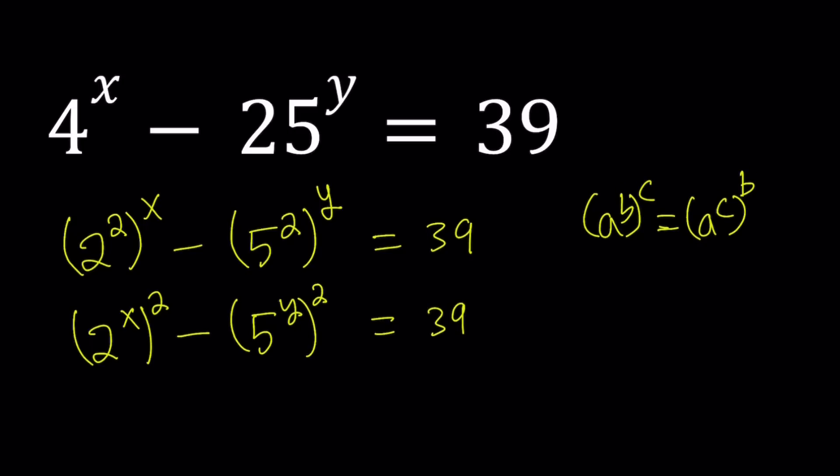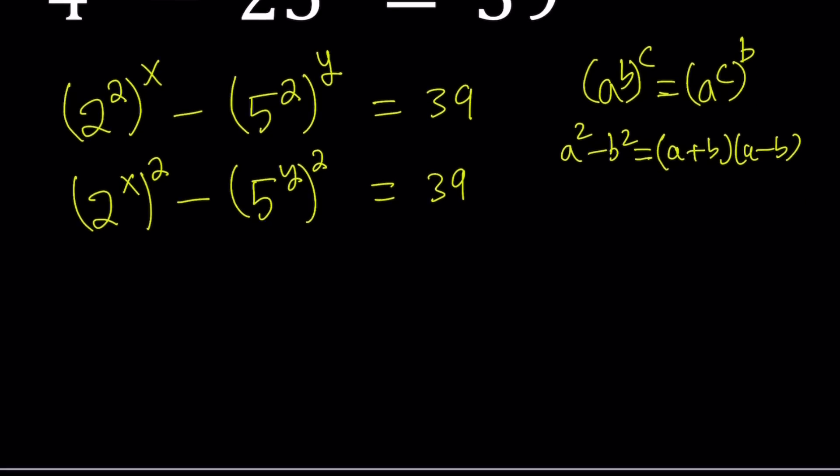Now, the good thing about that is I can't really do anything to a difference of something to the power x minus something to the power y, but if they're both squares, I can definitely do something. And what is that called? Difference of two squares. Remember, I told you it's an important identity, and we use that a lot. So we can write this as 2 to the power x plus 5 to the power y, multiplied by 2 to the power x minus 5 to the power y, and the result is 39.